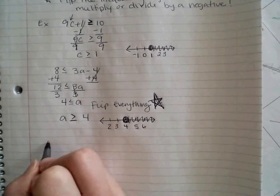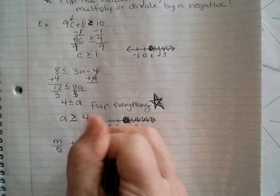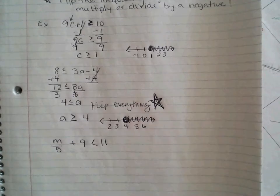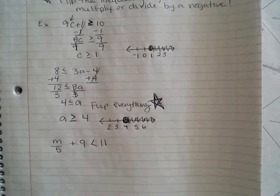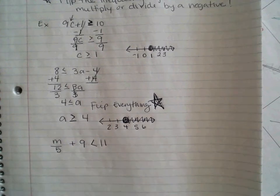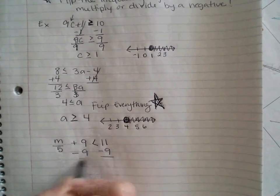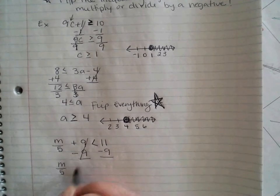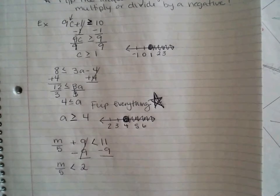Okay. What if I give you m over 5 plus 9 is less than 11? Saving for last. Saving my variable for last. The first thing I have to do is subtract 9. Cancels out. Bring down everything. m over 5.